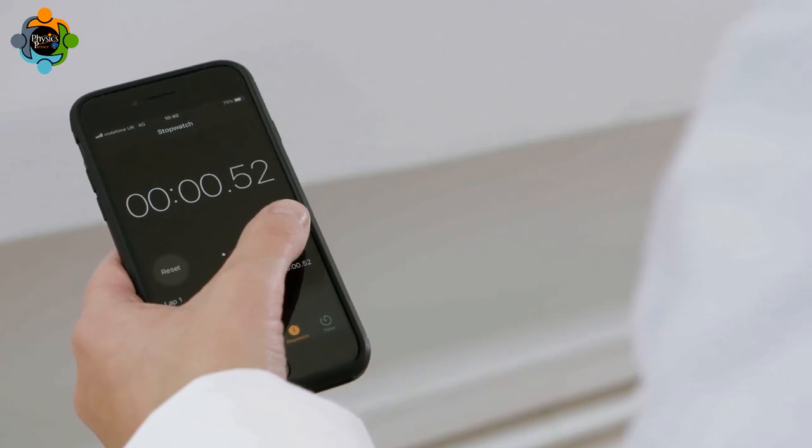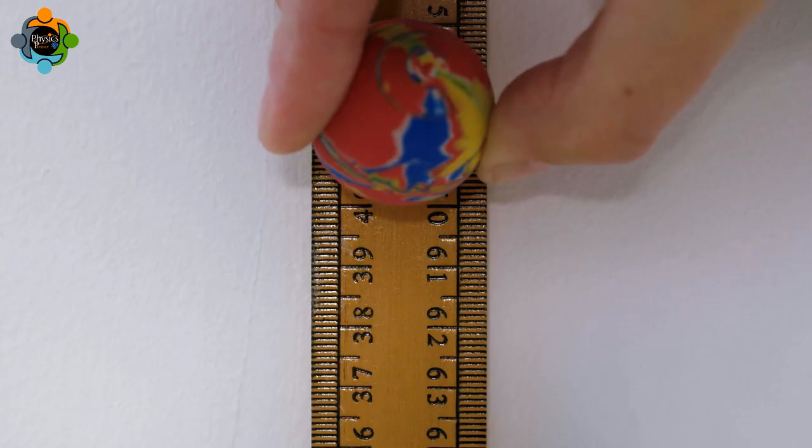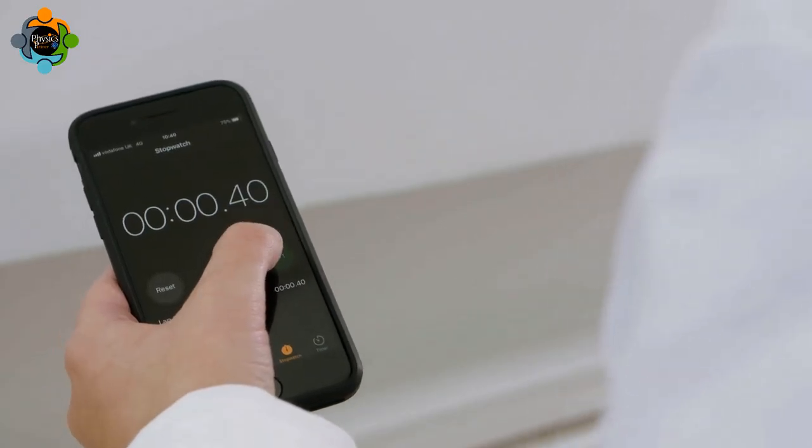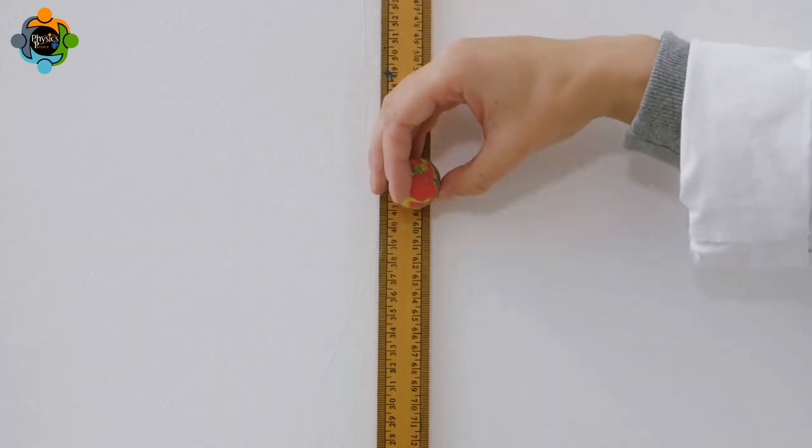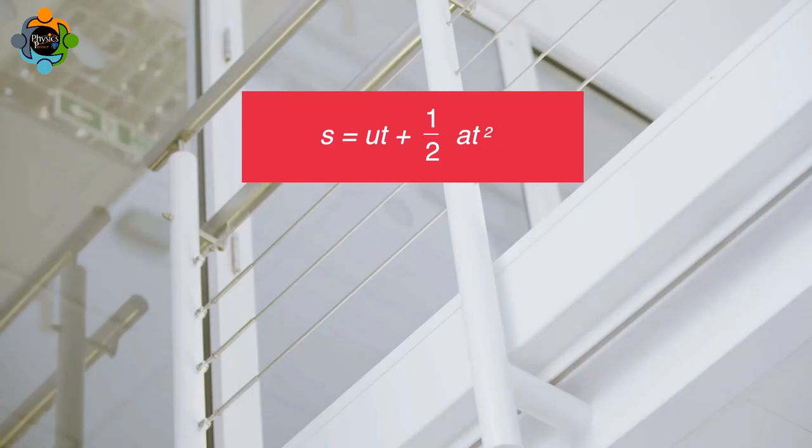The ball is now dropped from 1.40 meters and the time is recorded. For each new height, three repetitions are carried out so that an average can be recorded.